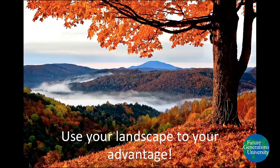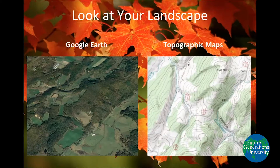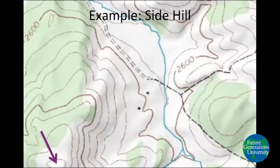Use your landscape to your advantage. It is something that is unique to your property and can provide a huge advantage in your tubing layout if used properly. The next step is to look at your landscape and where your maples are. A couple of things to help visualize your landscape from the comfort of your home are Google Earth and topographic maps. Of course, walking your land is a very easy way to get a good handle on what your landscape offers, but Google Earth and topographic maps — both available online — can be very helpful. For the rest of this and the examples I'm about to provide, we will be using topographic maps.